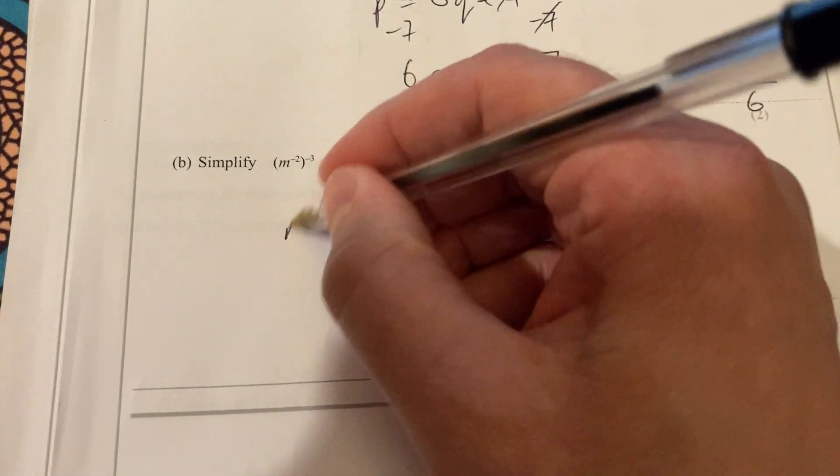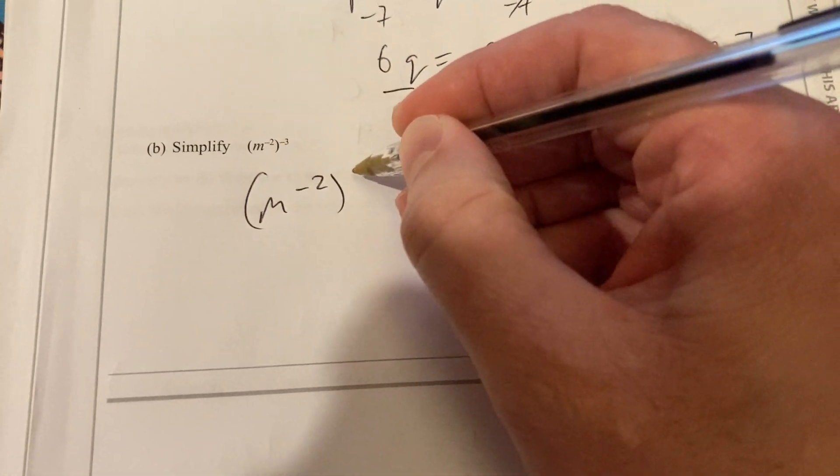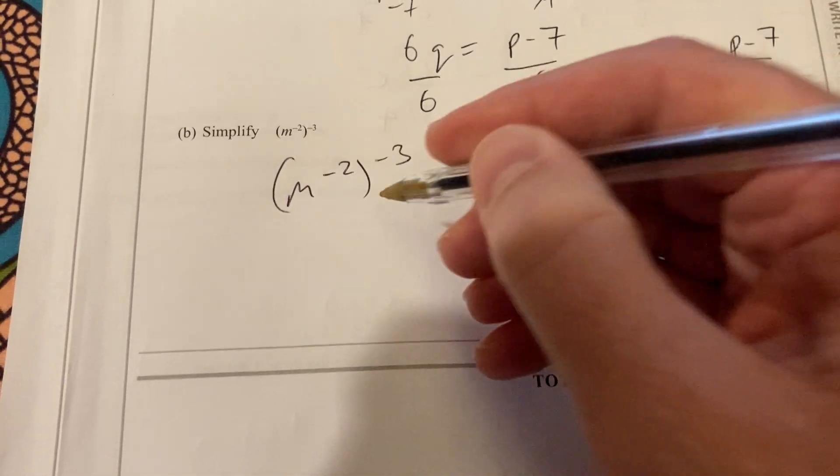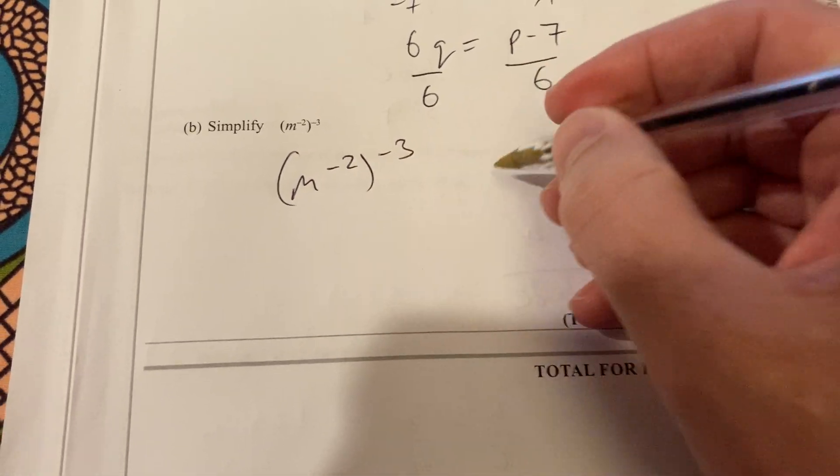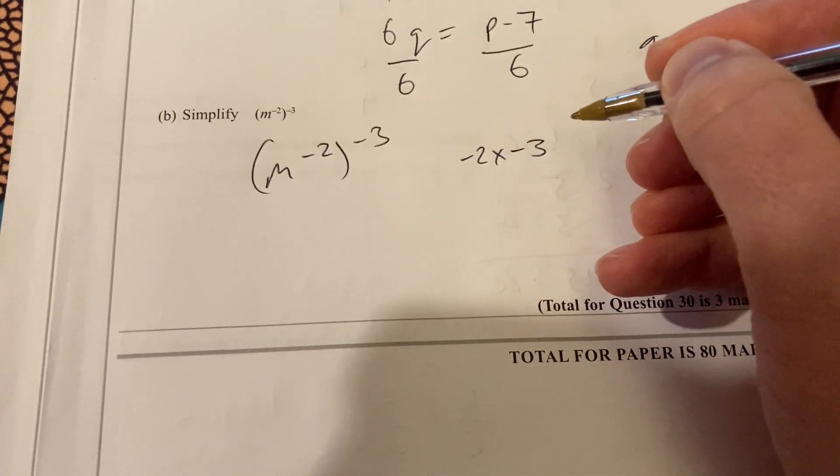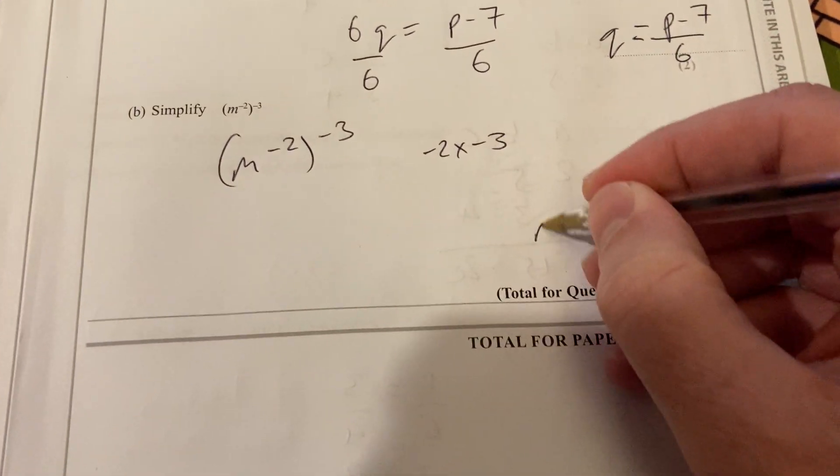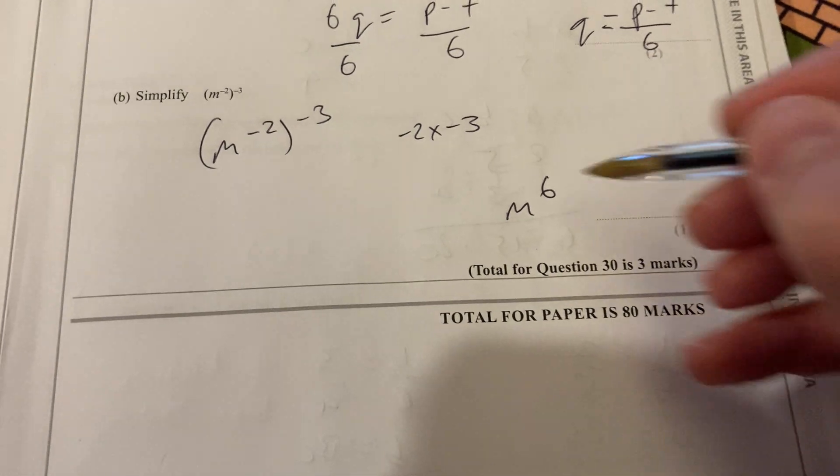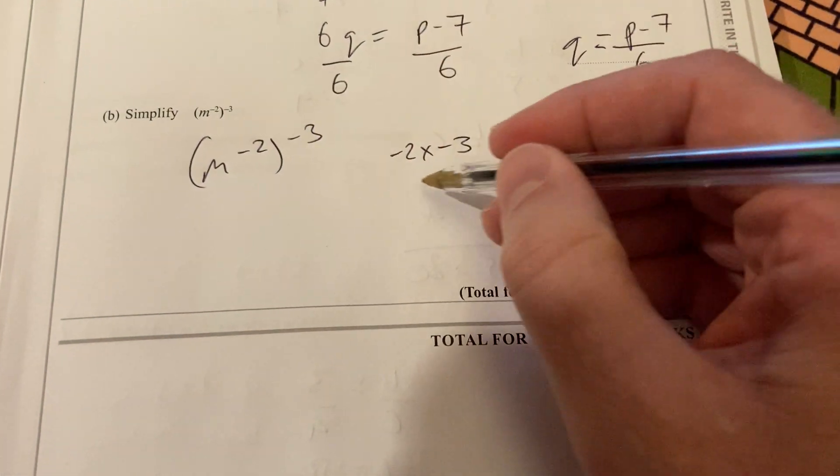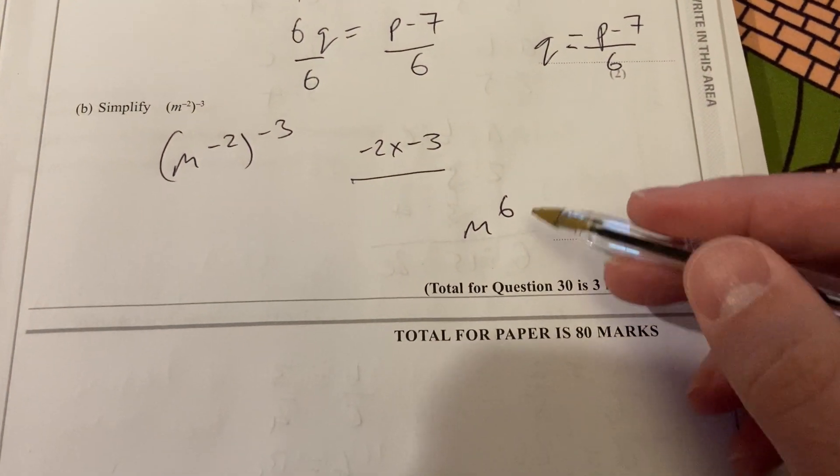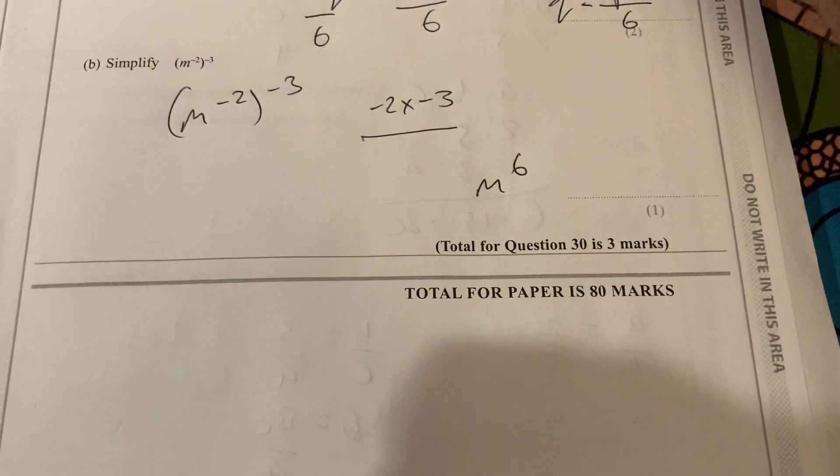Okay. Index laws here. M to minus 2 raised to the power of minus 3. When you raise a power to another power, you multiply them, so it's minus 2 times minus 3. Negative times the negative, it's going to be positive, so it's M to the 6. It's just one mark, but it's knowing the power law there. So that's M to the 6 there.